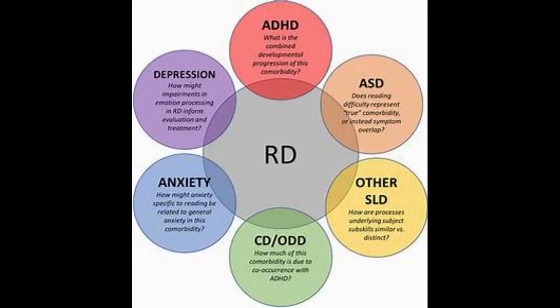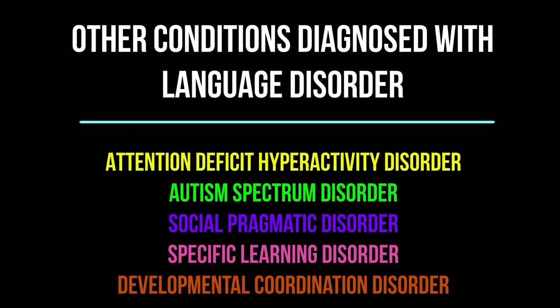It's very normal for a child diagnosed with language disorder to be diagnosed with other conditions as well, and this is known as having comorbidities. The other conditions that are often diagnosed alongside language disorder are attention deficit hyperactivity disorder, autism spectrum disorder, social pragmatic disorder, specific learning disorder, and developmental coordination disorder.